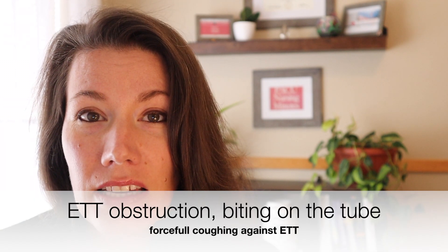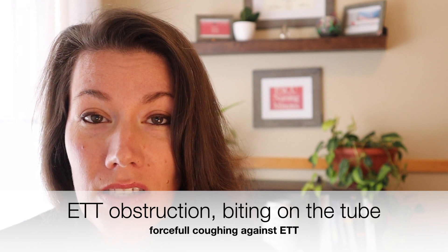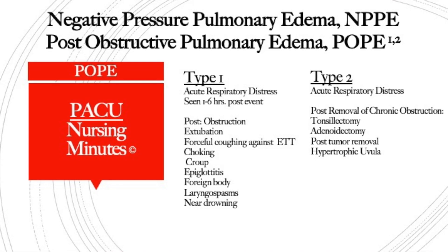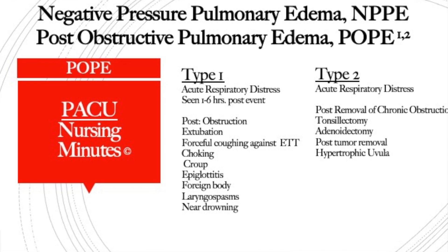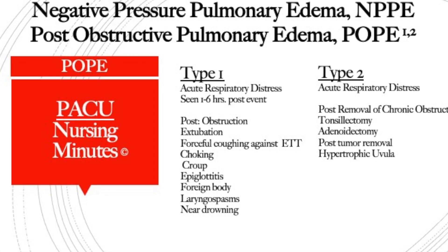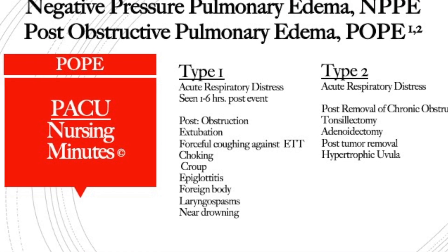There are two types of post-obstructive pulmonary edema, and primarily what you're going to see in the recovery room is a response to being intubated. It's acute respiratory distress that usually happens. I clinically have seen it within the first hour post-extubation, but the literature says it can be up to six hours post the event. Type 1 is either from being intubated or forceful coughing against an endotracheal tube, which is actually the most common cause of POPE you will see in the PACU — somebody wasn't sedated heavily enough and they were coughing against the endotracheal tube.